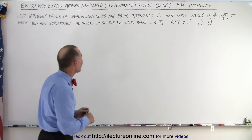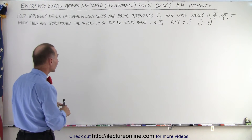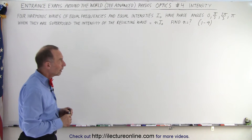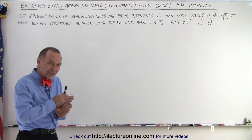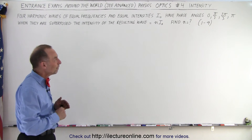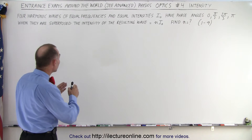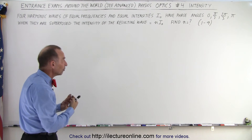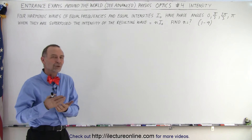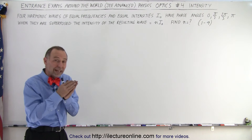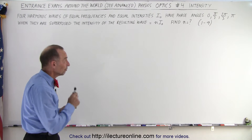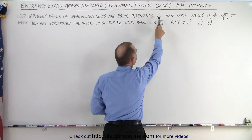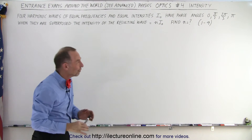What we have here is four harmonic waves of equal frequency and equal intensity I₀, but they have phase angles — there is a difference in phases between the four. They are superposed to one another, so they all shine together. We want to find the magnitude of the intensity of the four waves put together.